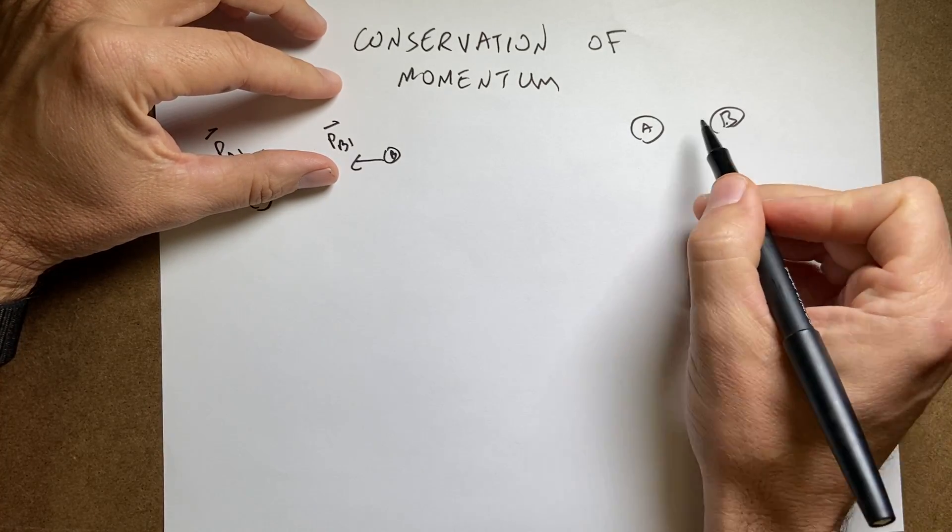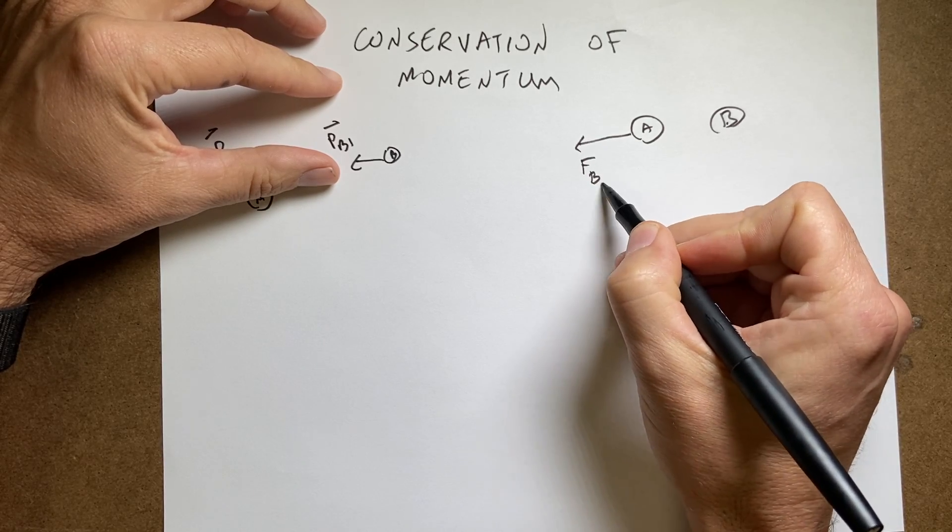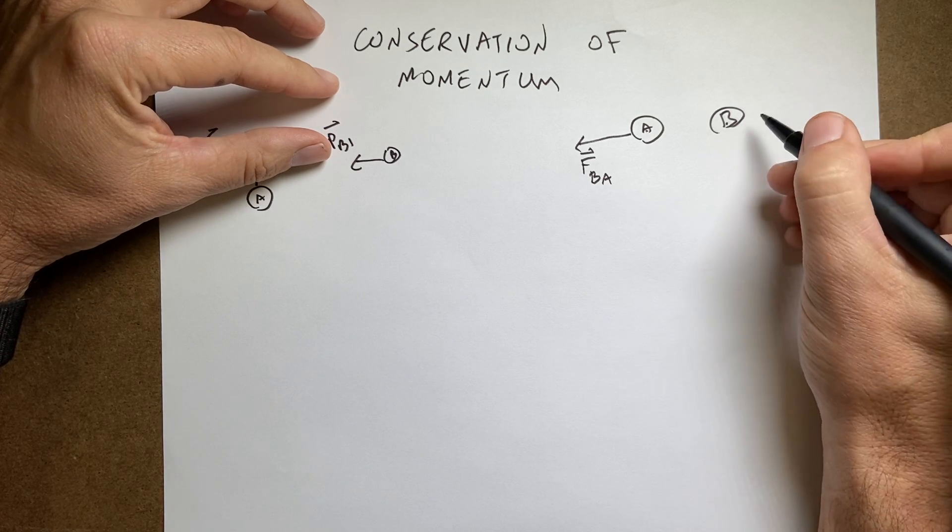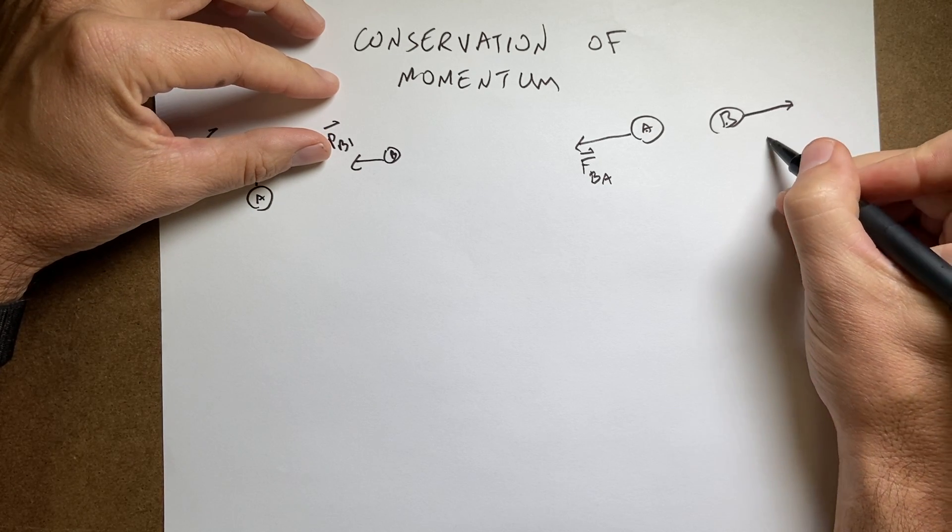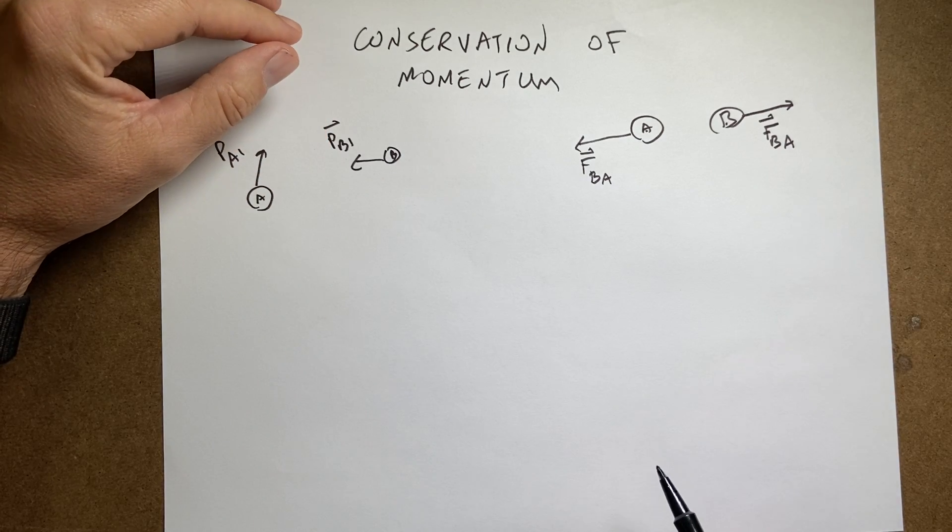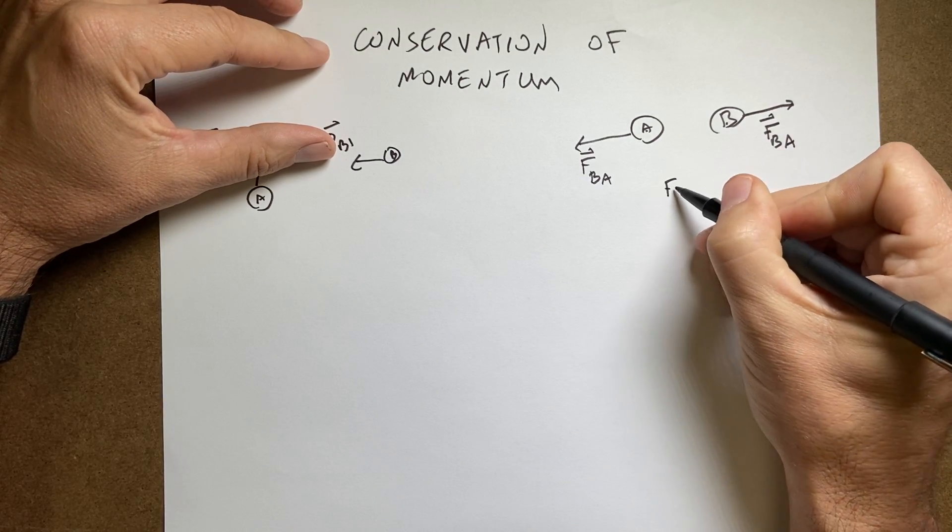then object B pushes on A, and we'll write that as FB on A. But if that's the case, A also pushes on B with the exact same magnitude force FBA, but in the opposite direction, and that is Newton's third law. It says that forces come in pairs.